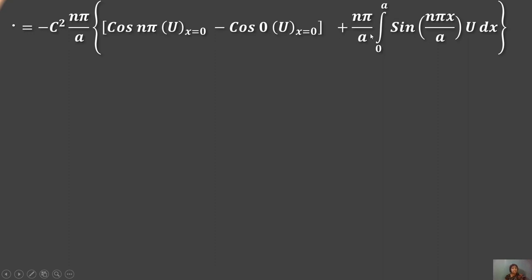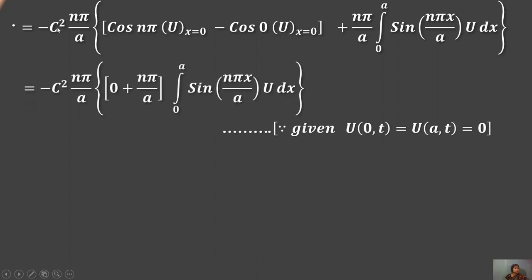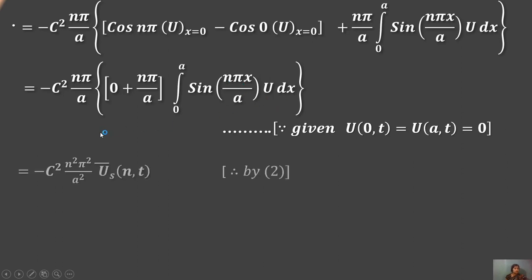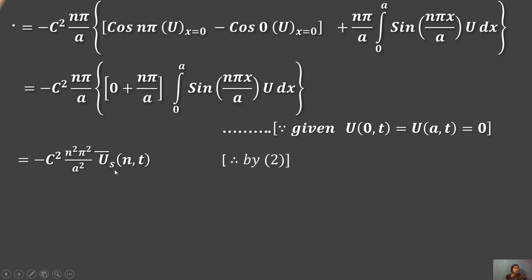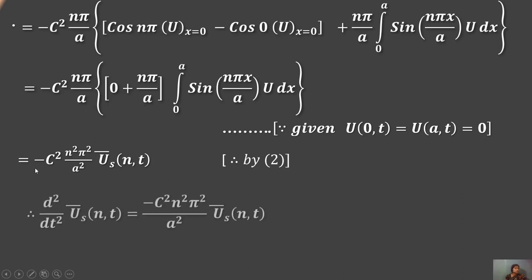Substituting the boundary conditions u(0,t) = 0 and u(a,t) = 0, the boundary terms vanish. We use cos(0) = 1 and u at x=0 equals 0, so those terms drop out. The remaining integral gives (nπ/a)·∫₀ᵃ sin(nπx/a)·u dx = (nπ/a)·Uˢ(n,t).